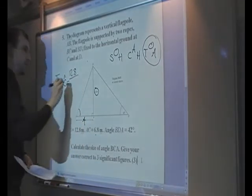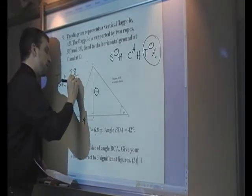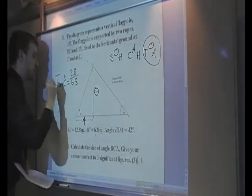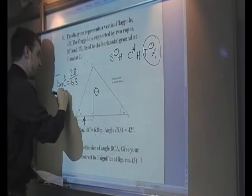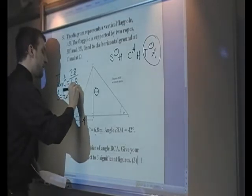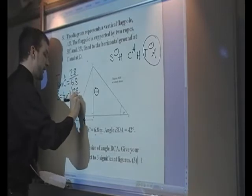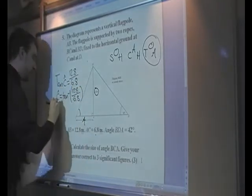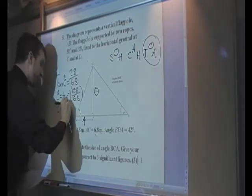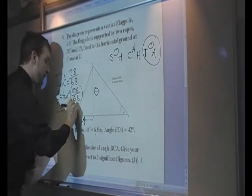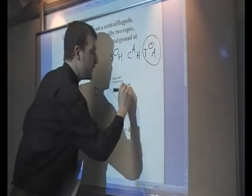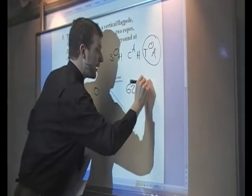The adjacent side is 6.8 metres. So to find angle C, we have to do the inverse tan of 12.8 divided by 6.8, which should give you an answer of 62.0205, which to three significant figures will be 62.0 degrees.